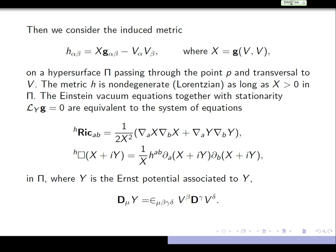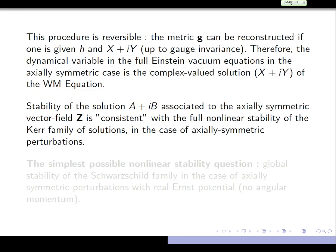One can define the Ernst potential associated to a vector field in a general spacetime: any vector field satisfying the field equations admits an Ernst potential, and it turns out this is integrable. In the axially symmetric world, the wave map is related to the metric — the metric is in some sense determined elliptically by the wave map, and the wave map captures all the dynamics of the evolution. The procedure is reversible: once you have the metric in the co-dimension-one picture and the wave map, up to gauge invariance, one can determine back the full metric.